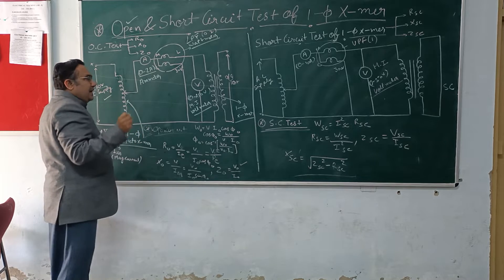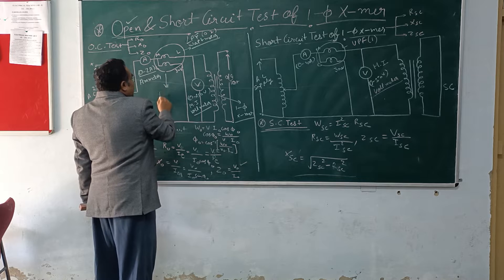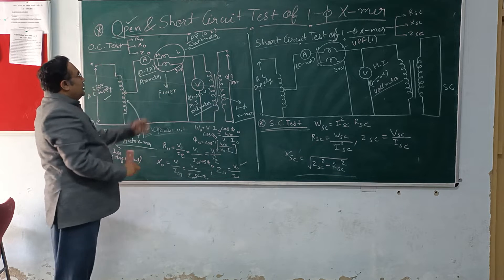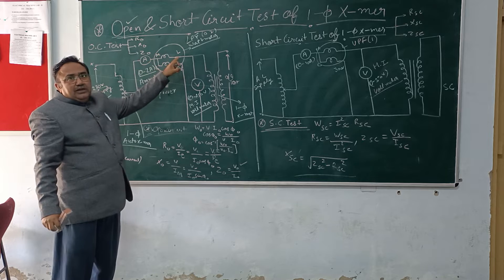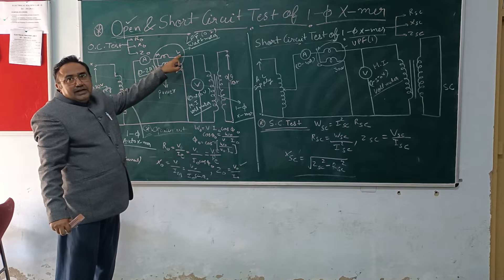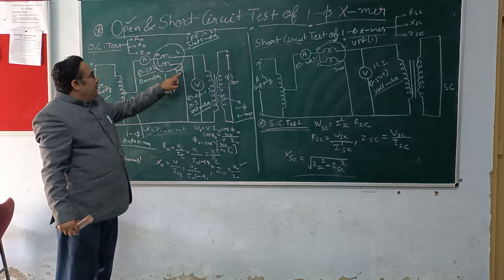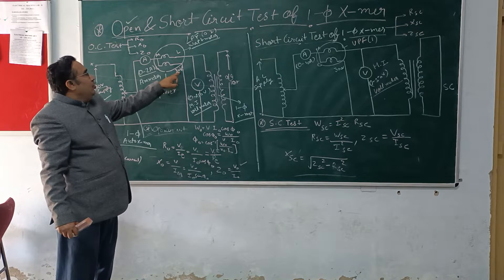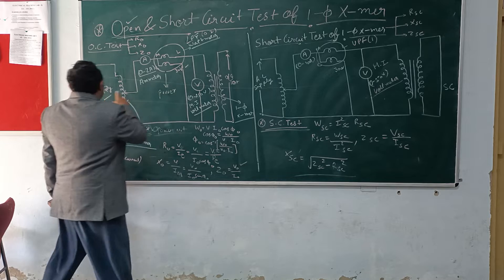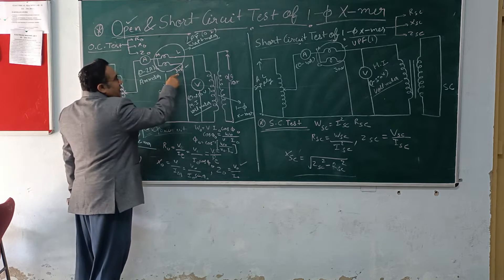Why is it 0 to 2 amperes? I will tell you later on. Then we have a wattmeter. This wattmeter measures the input power being fed to the transformer. This wattmeter has four terminals: M, L - this is the current coil connection - C, and a voltage point, that is maybe 300 volt or 150 volt. Here we have to choose 300 volt because our voltage is 220 volt maximum, so the next maximum range is 300 volt.